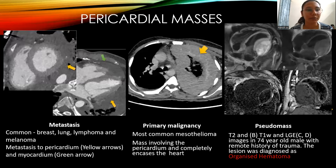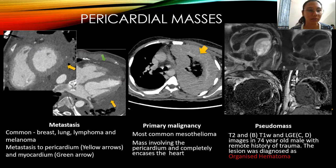Pericardial masses: First, metastasis. Common metastases are from breast carcinoma, lung carcinoma, lymphoma, and melanoma. In the images, metastasis to the pericardium is indicated by yellow arrows and metastasis to the myocardium by green arrows.